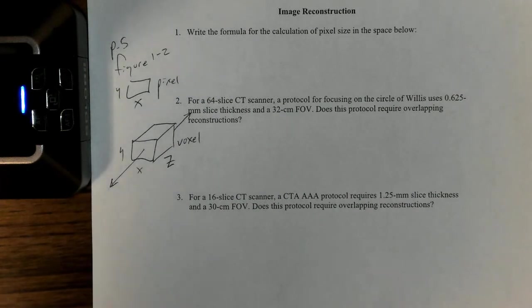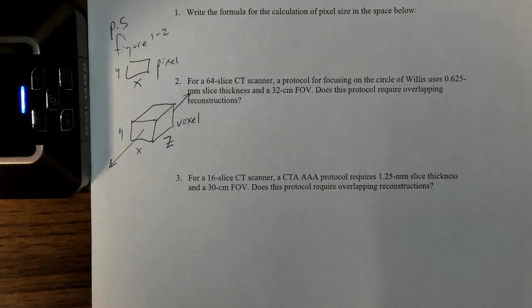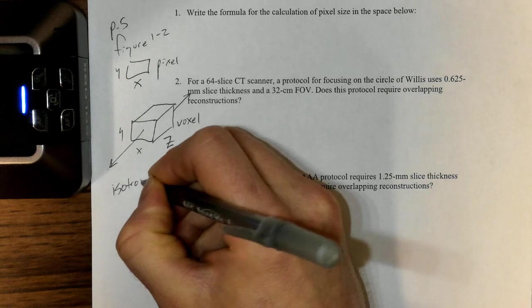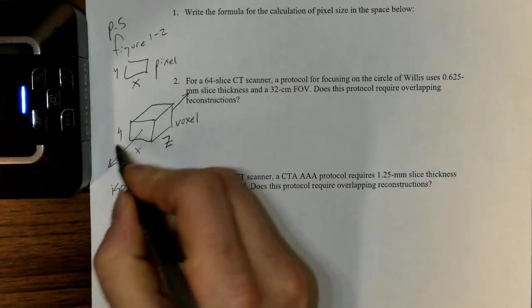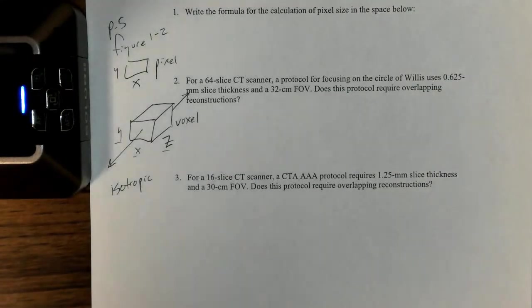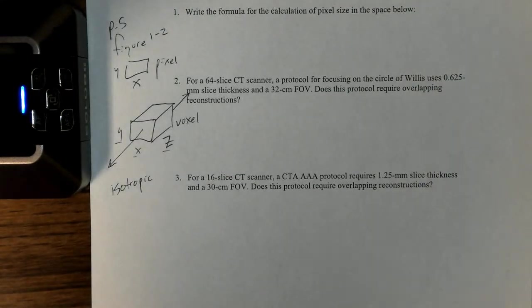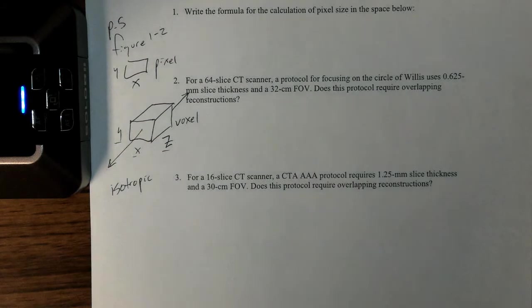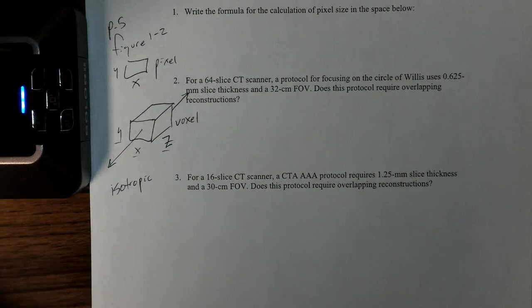There's an important key term here to consider when we're thinking about this kind of stuff: we like voxels that are isotropic. Isotropic means that they're close to equal in all three of these dimensions. When they are isotropic in nature, it ensures that no data is lost during reconstruction or especially the post-processing type stuff like multi-planar reconstructions and the fancy 3D reconstructions that we sometimes do.